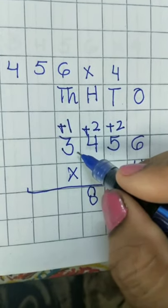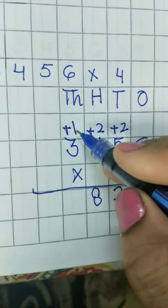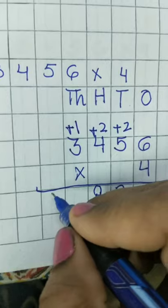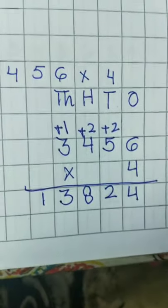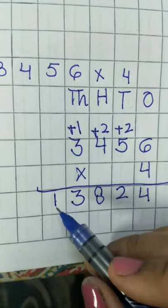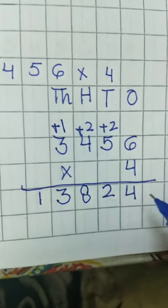4 times 3 is 12. 12 plus 1, 13. So we will write 13 here. So our answer will be 13,824.